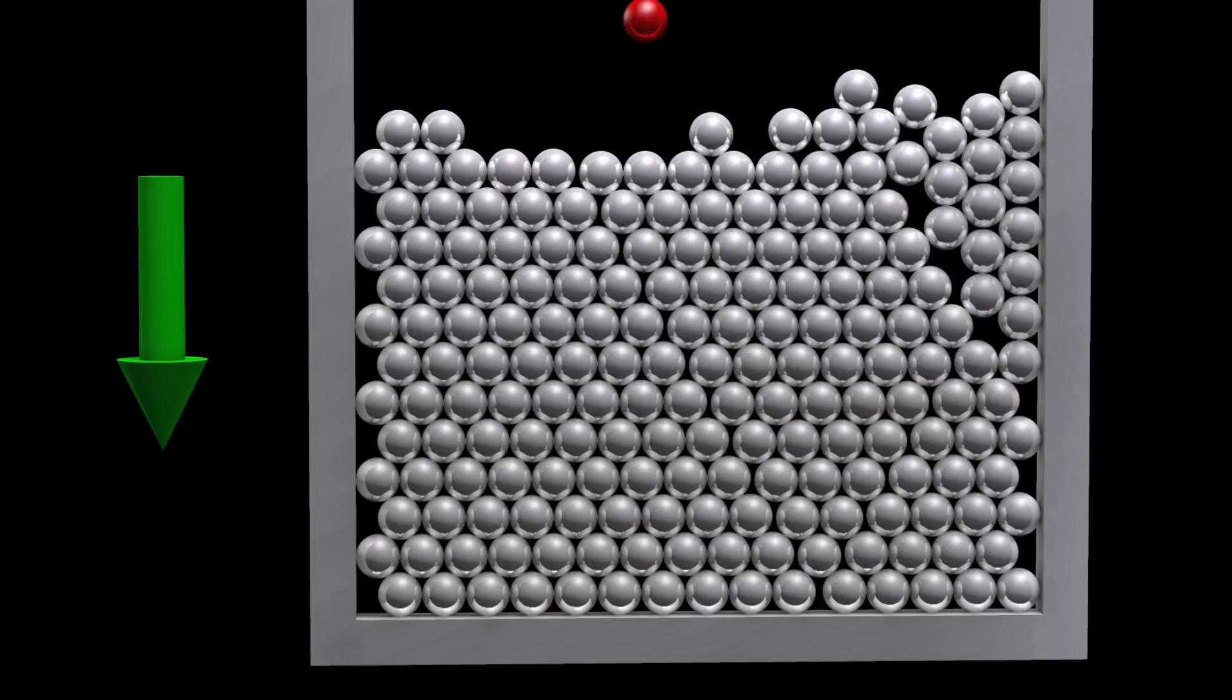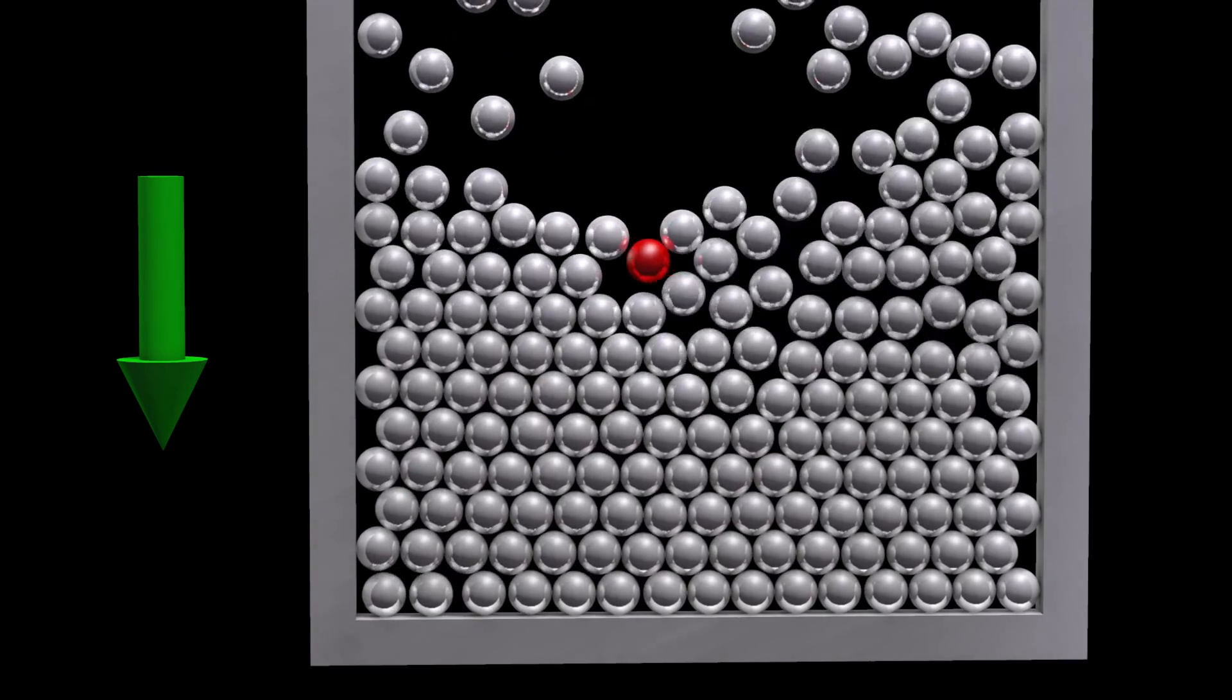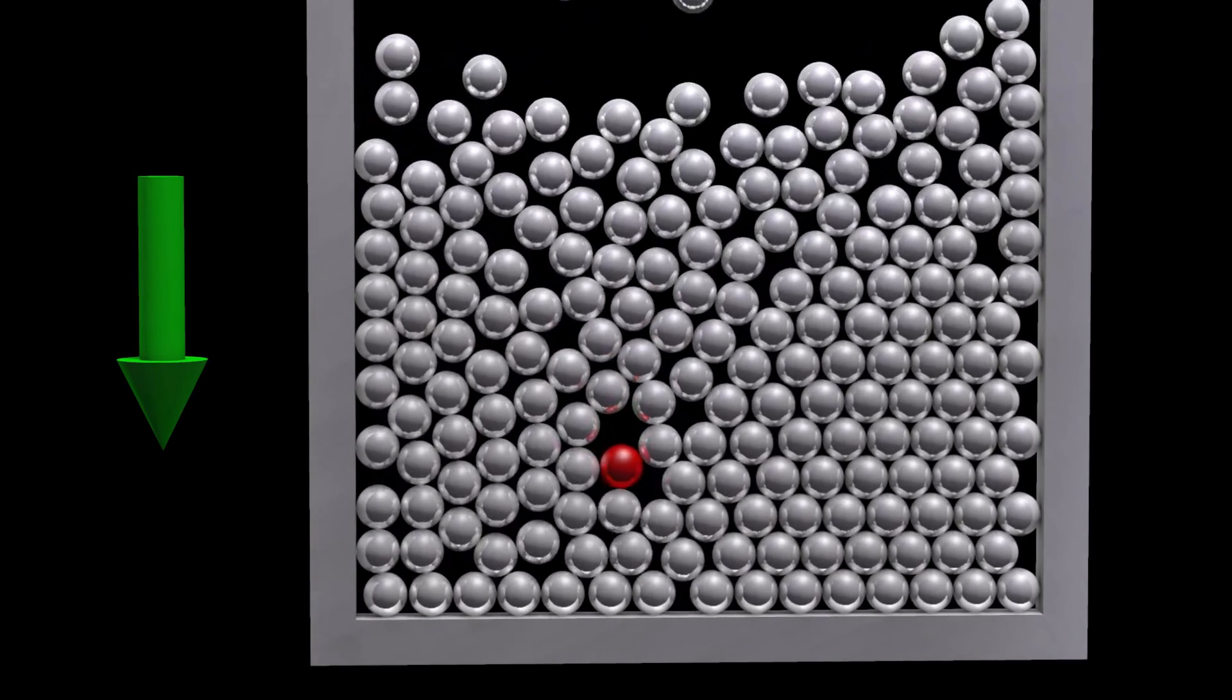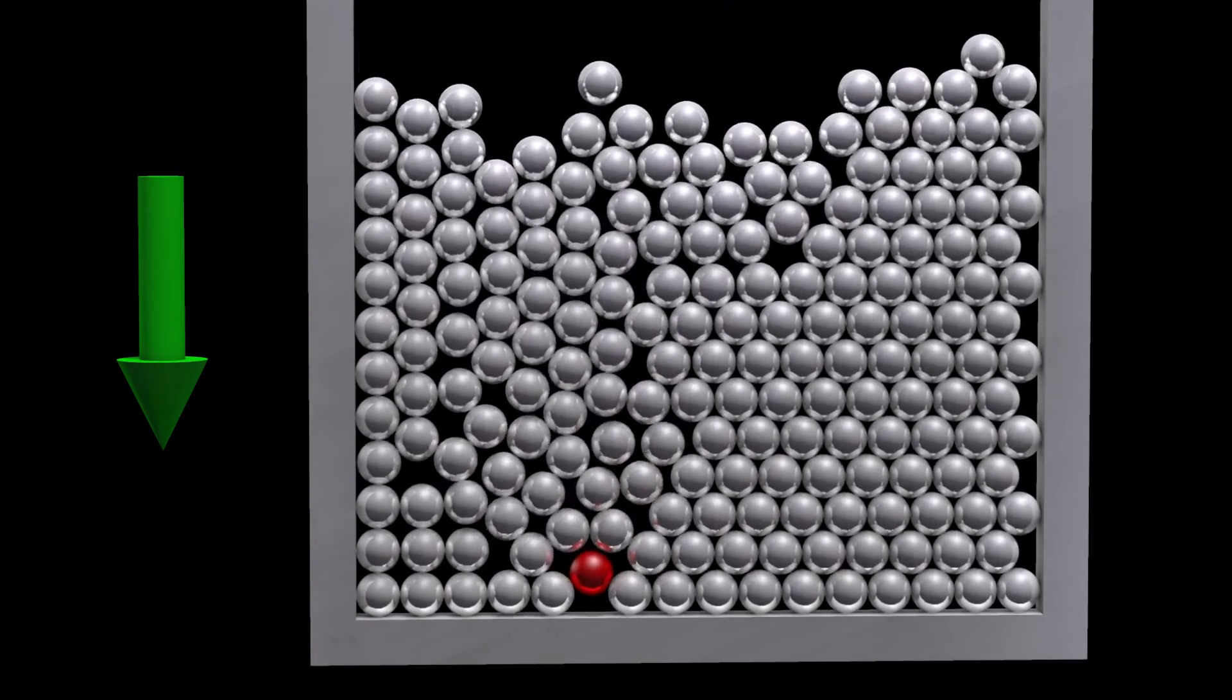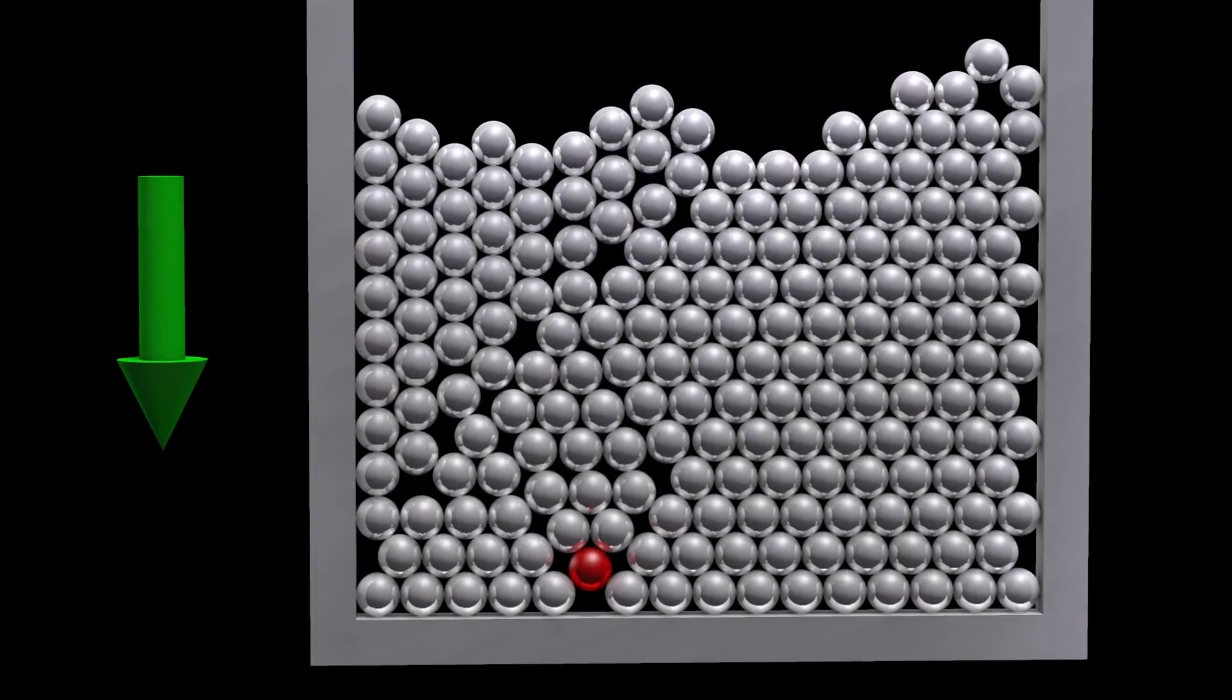The red spheres then push the less dense white spheres out of the way, in the same way that when gravity is present, objects with higher densities sink to the bottom.